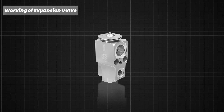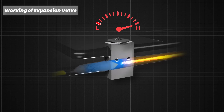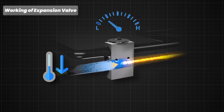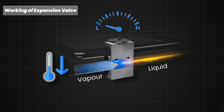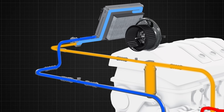The expansion valve is a vital component in a car's air conditioning system, responsible for regulating the flow of refrigerant from the high-pressure side to the low-pressure side of the system. When the high-pressure liquid refrigerant passes through the expansion valve, it encounters a sudden drop in pressure. This pressure drop causes a further drop in temperature, leading to a partial phase change of the refrigerant from liquid to vapor. The refrigerant exits the expansion valve as a mixture of liquid and vapor and enters the evaporator.